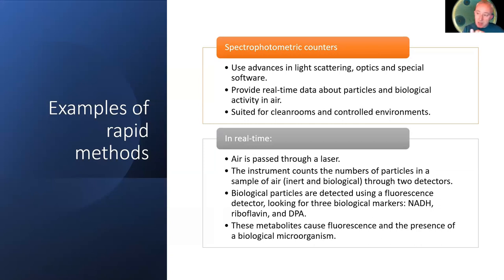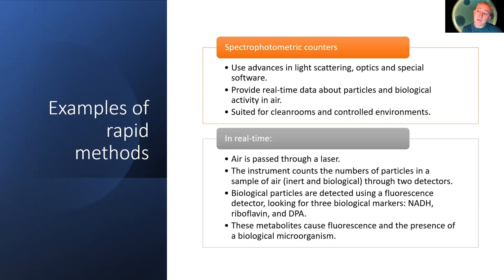Spectrophotometric counters are one example of a rapid microbiological method. These are based on advances in light scattering and optics using special software and sensors. These counters can tell us whether the particles in the air are inert or biological, by looking for markers like NADH, riboflavin, and also DPA — the acid that helps form bacterial spores. If these metabolites are present, they fluoresce and you get additional readings. This is the kind of technology giving us greater knowledge about our levels of control.